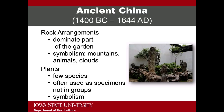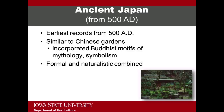The image on this slide is a vignette of a rock and plant feature surrounded by walls on two sides. The earliest records of ancient Japanese gardens date from 500 AD. These early gardens were similar to Chinese gardens in large part because the garden style was introduced by Japanese priests who studied with Buddhist monks in China. The gardens incorporated a number of Buddhist motifs including symbolism and mythology. Ancient Japanese gardens included a combination of formal or manicured elements combined with naturalistic features. The image on this slide is of the tea garden in the Portland, Oregon Japanese garden.